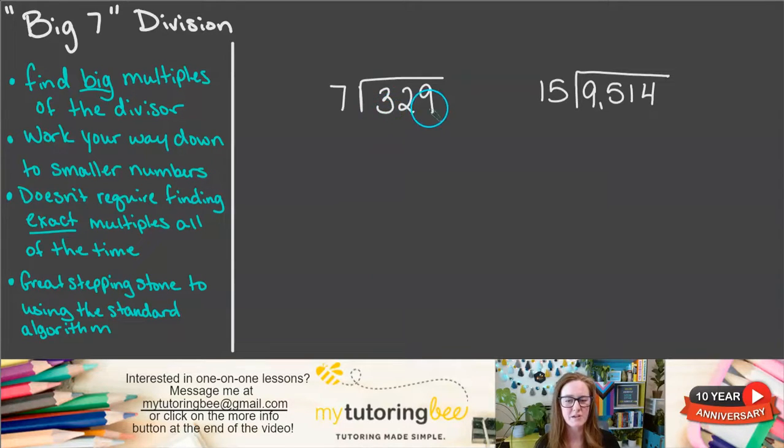Okay, to start off, we've got 329 divided by 7. So this looks like you would typically see it in a long division problem. However, to make it a Big 7 problem, and I've heard this called different names, but the one that I hear most commonly is Big 7, because when we put this line going all the way down the side over here, this bracket now looks like a Big 7. That's where the name comes from.